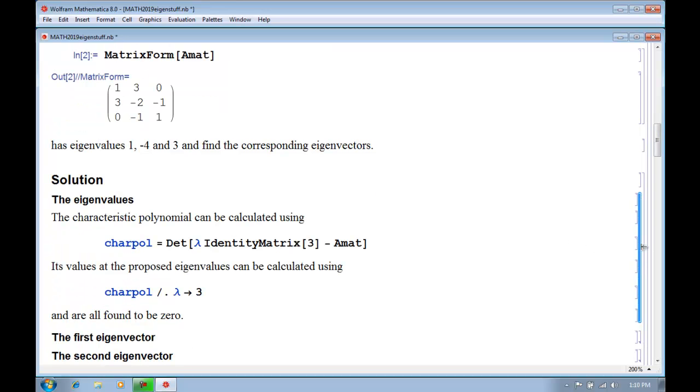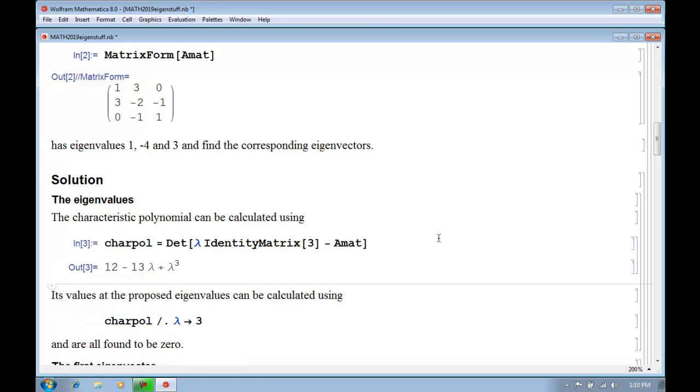So the first thing to do is the eigenvalues, and the eigenvalues are the roots of the characteristic polynomial, which is calculated by taking the determinant of lambda times the identity matrix minus the matrix whose eigenvalues and eigenvectors we want to find. So we do that, and we find that this characteristic polynomial is a cubic polynomial.